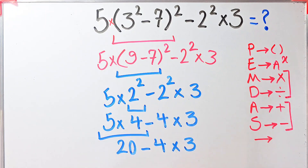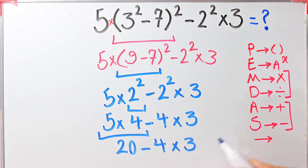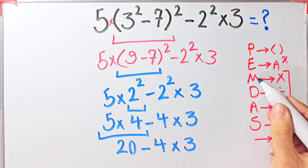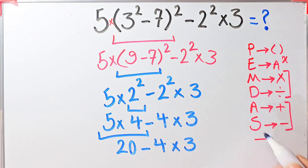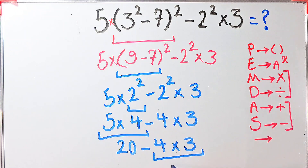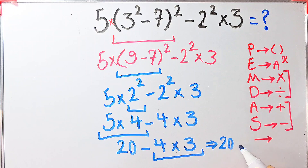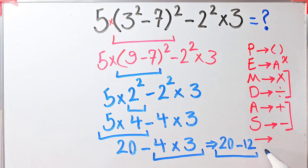Now we have 20 minus 4 times 3. Again we have subtraction and multiplication. We simplify the multiplication first because multiplication has higher priority than subtraction. Four times three equals 12. Now we have 20 minus 12, and the final answer of this question equals 8.